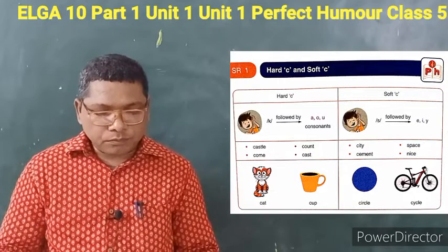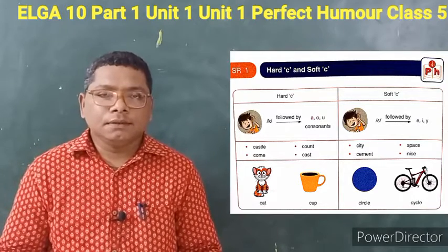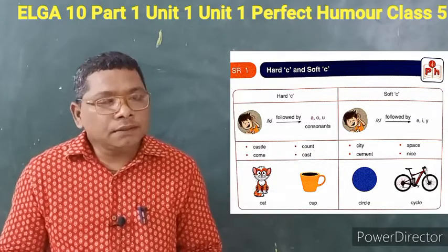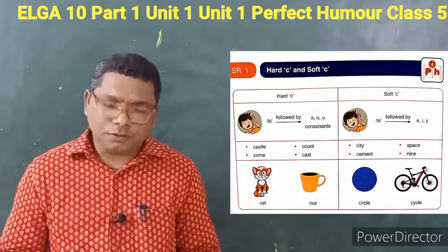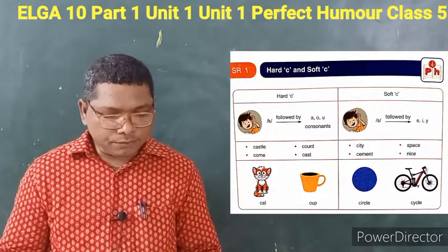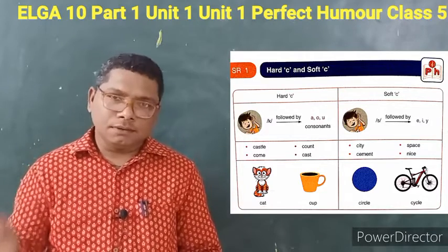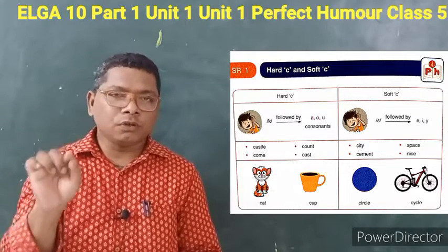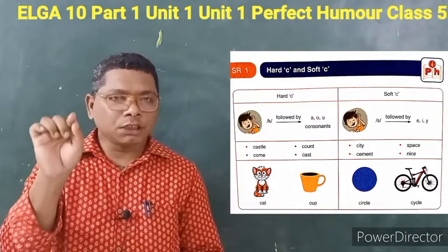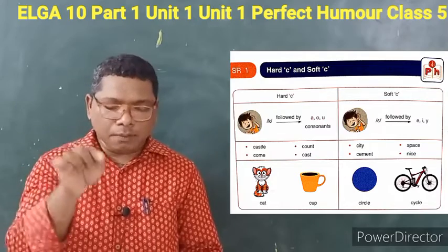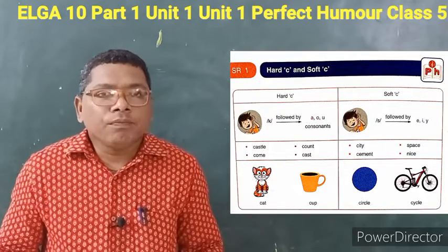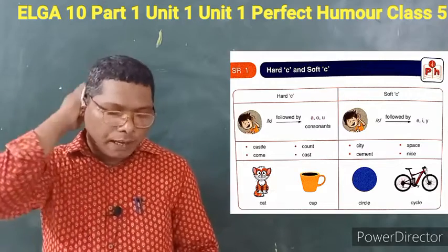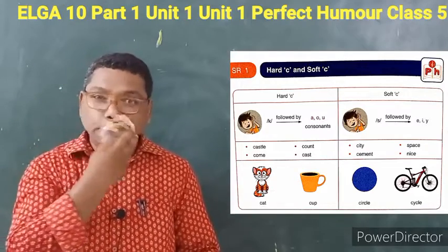Now, soft C examples: city, space, cement, nice. You may see here — city — the sound is S, but the spelling used is C. That is why it is called soft C.